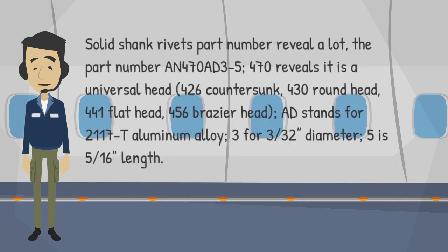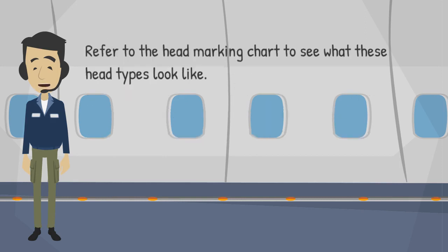Solid shank rivet part numbers reveal a lot. For example, AN-470-AD3-5: 470 indicates a universal head; 426 is countersunk; 430 is round head; 441 is flat head; 456 is brazier head. AD stands for 2117-T aluminum alloy. The diameter designation 3 equals 3/32 inch, and 5 indicates 5/16 inch length. Refer to the head marking chart to see what these head types look like.